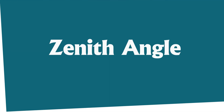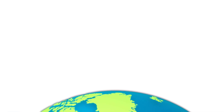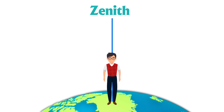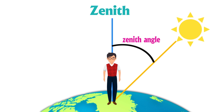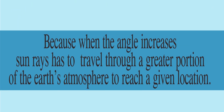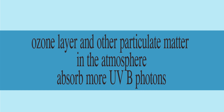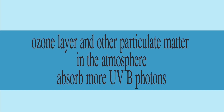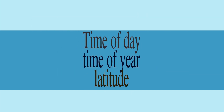Another key factor influencing UVB radiation is the solar zenith angle. In astronomy, the zenith is the point in the sky directly above an observer. The zenith angle is the angle between the zenith and a line from the observer to the Sun. Smaller zenith angles result in more intense UV radiation, because when the angle increases, sun rays have to travel through a greater portion of the Earth's atmosphere, creating a greater opportunity to absorb more UVB photons by the ozone layer and other particulate matter. Time of day, time of year, and latitude combine to establish the zenith angle for a specific point in time.